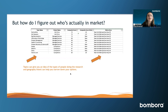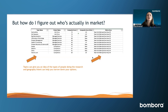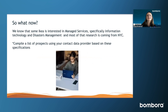Our geographic feature allows us to see where that research is actually coming from. Most of that research is coming from the New York metropolitan area. So I already know I'm going to be talking about information technology, disaster management, and the managed services we provide, and I want to target people based in New York. The next step is to go to my contact data provider and pull a list of New York-based titles that I think may be researching those types of topics.